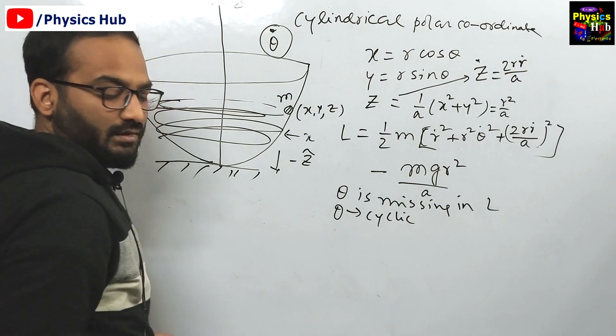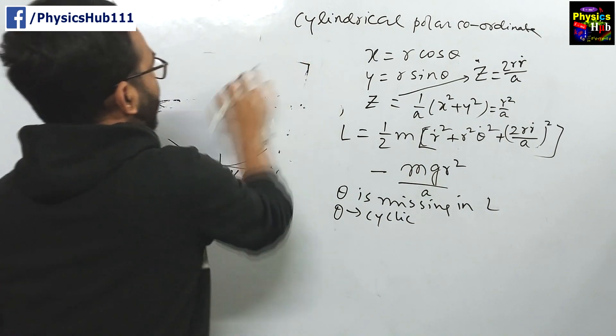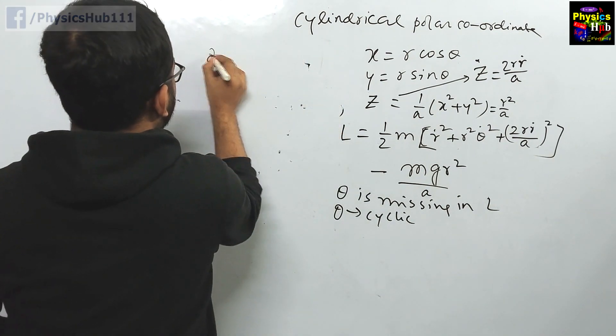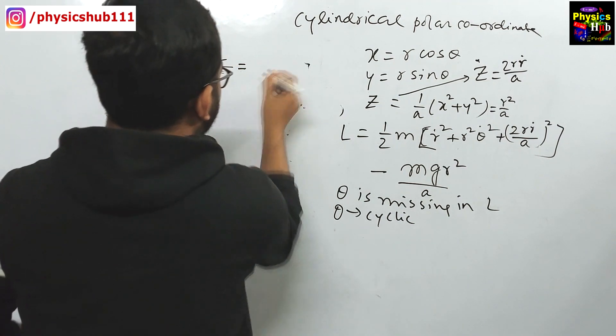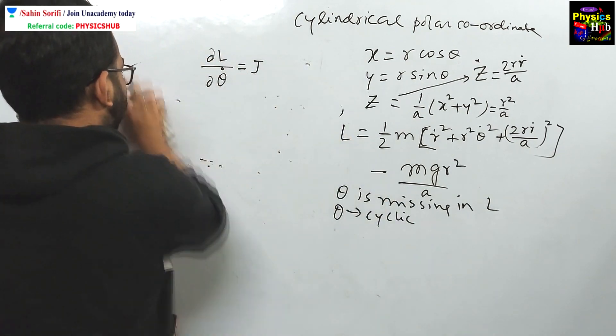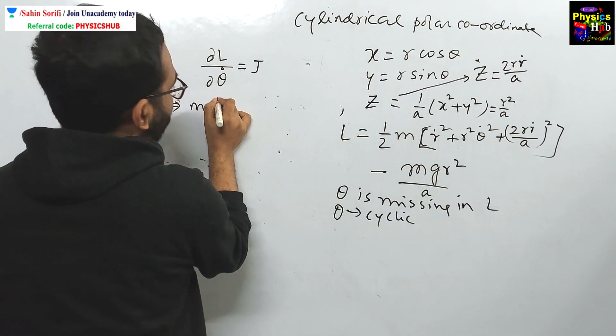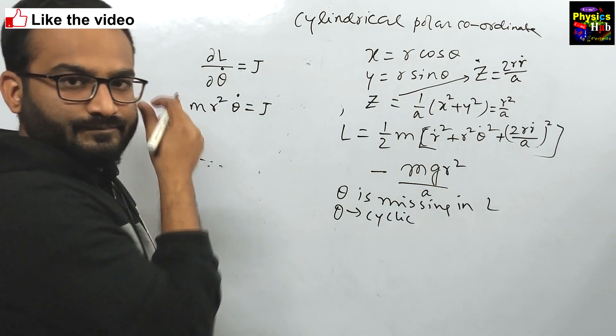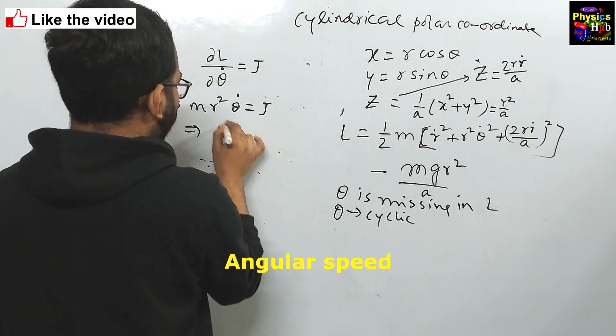The corresponding momentum corresponding to this cyclic coordinate theta is p theta. Del L by del theta dot is equals to constant, let us say that is j, angular momentum j. Now, if you take the derivative with respect to theta dot, what you get? You get mr square theta dot is equals to some constant j. We have to calculate the proportionality. Angular speed about z axis is proportional to this angular momentum theta dot.